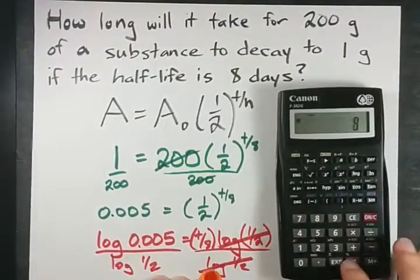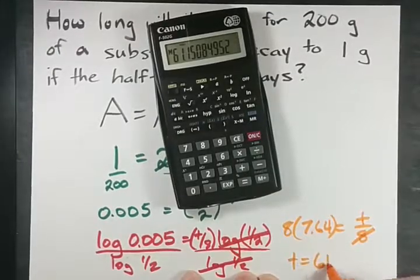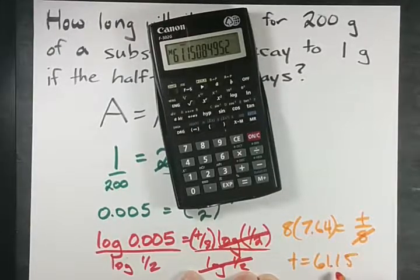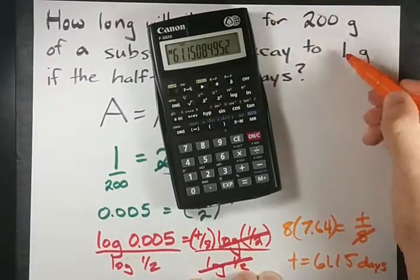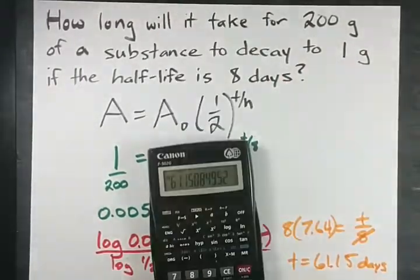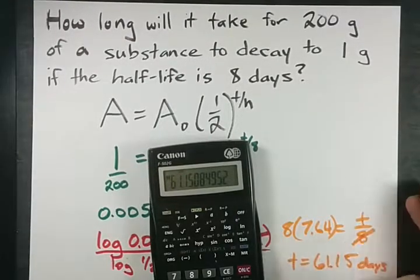I'll get out my calculator because I'm lazy. 61.15. So it'll take 61.15 days for that 200 grams to decay to 1 gram. 61.15 days is 7.64 half-lives.